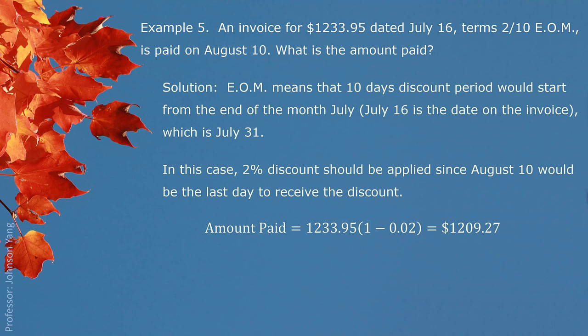These are some examples to help you understand how cash discount is applied, and ordinary dating and special dating have been explained clearly. See you next time.